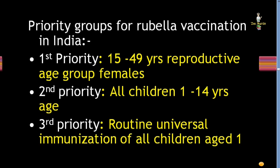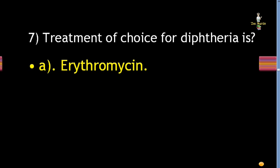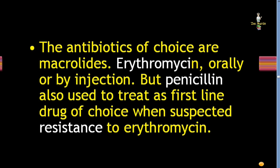Next question: treatment of choice for diphtheria is erythromycin, tetracycline, colistin, or DPT? Correct answer is erythromycin. The antibiotic of choice is macrolides — erythromycin is the drug of choice. It is given orally or by injection. Penicillin is also used as a first-line drug of choice when resistance to erythromycin is suspected.